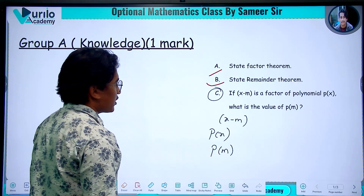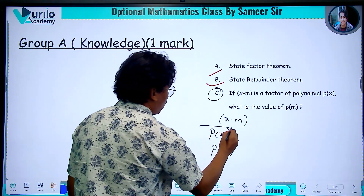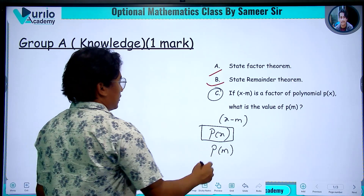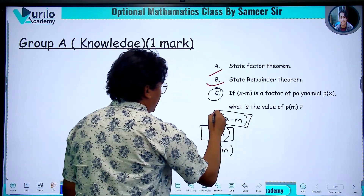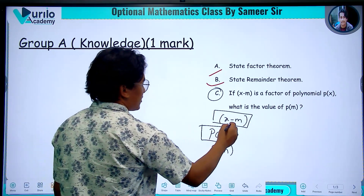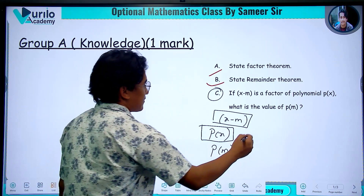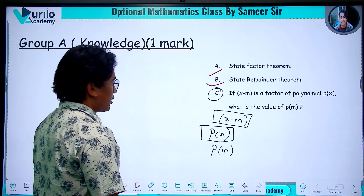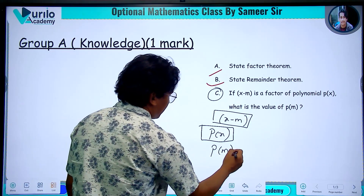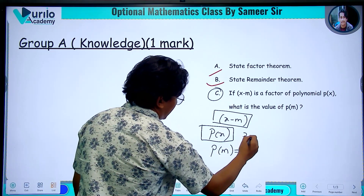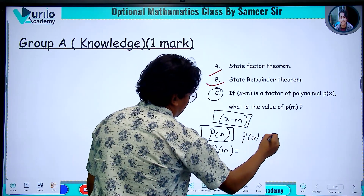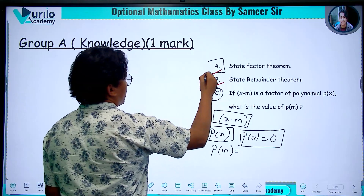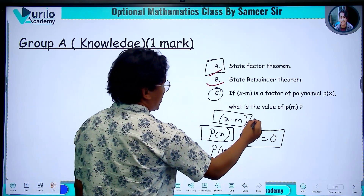What is the value of p of m? So, if the polynomial function has x minus m as a factor, then by the factor theorem, p of a is equal to 0. We will see that the statement of the factor theorem confirms this.